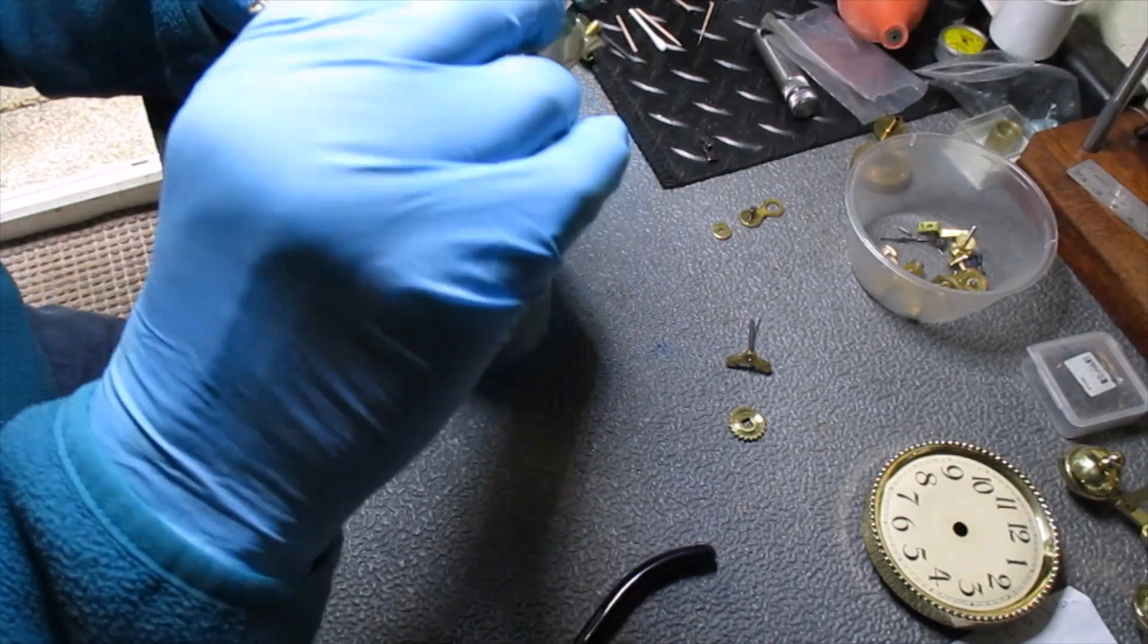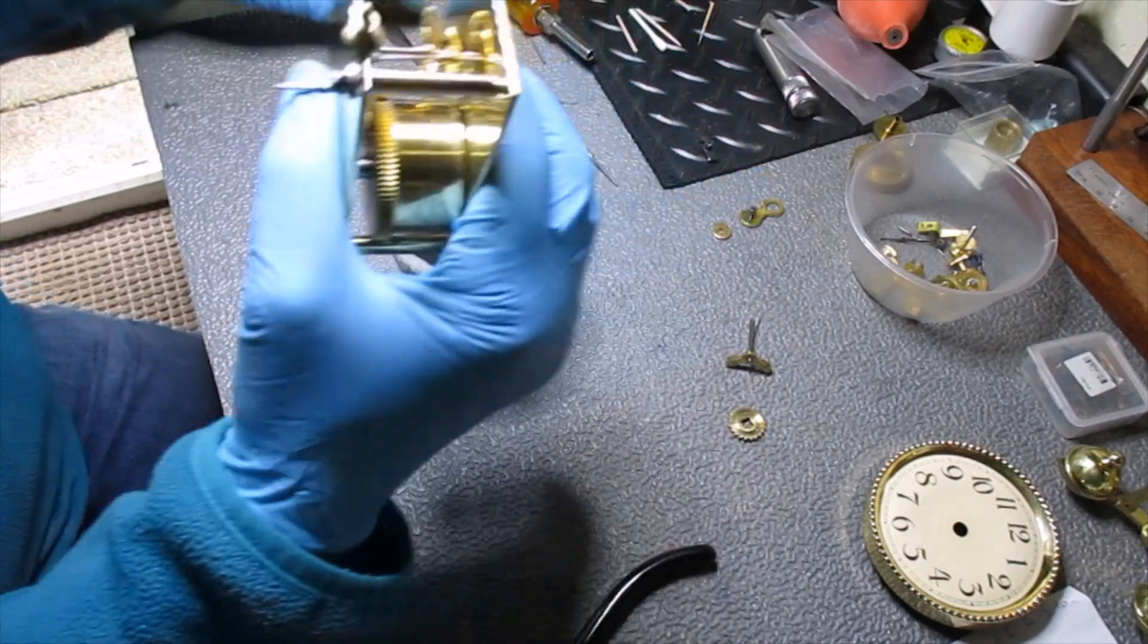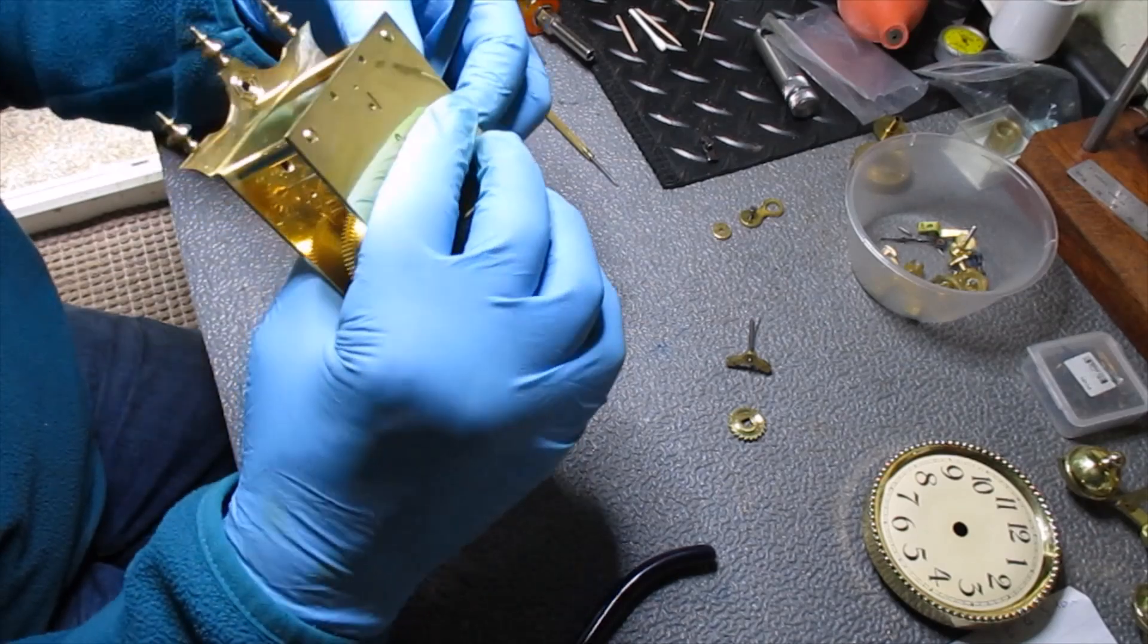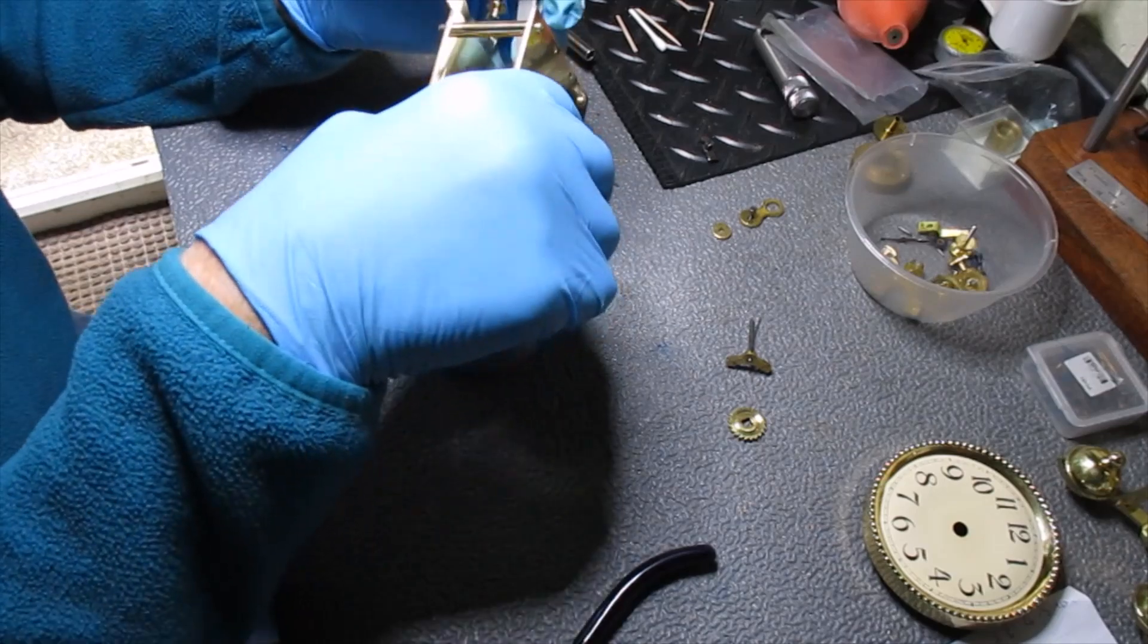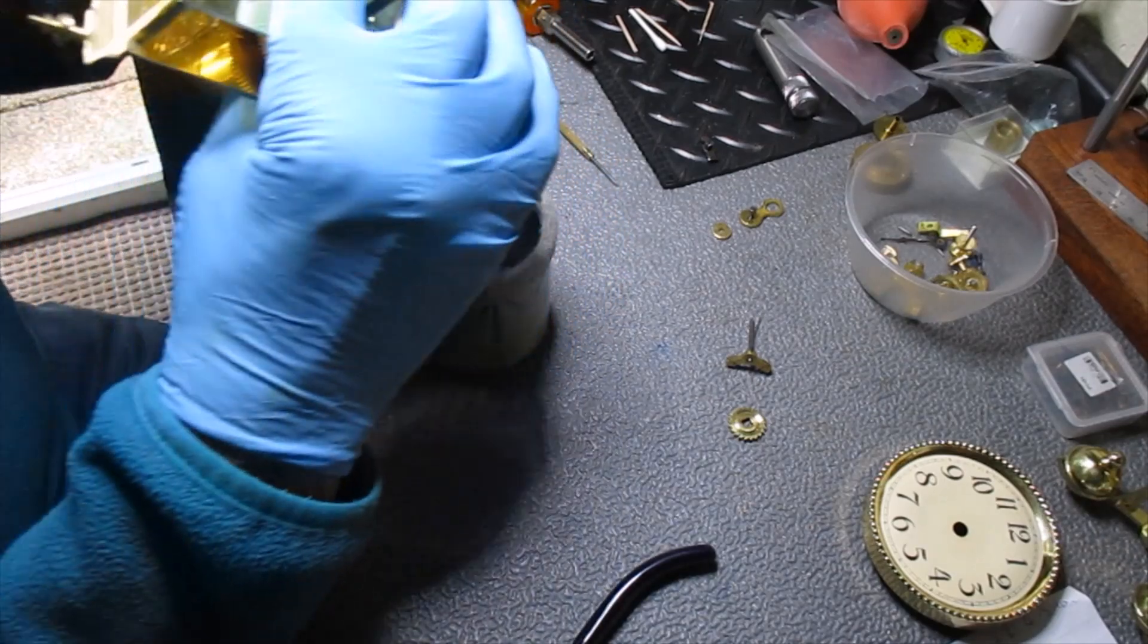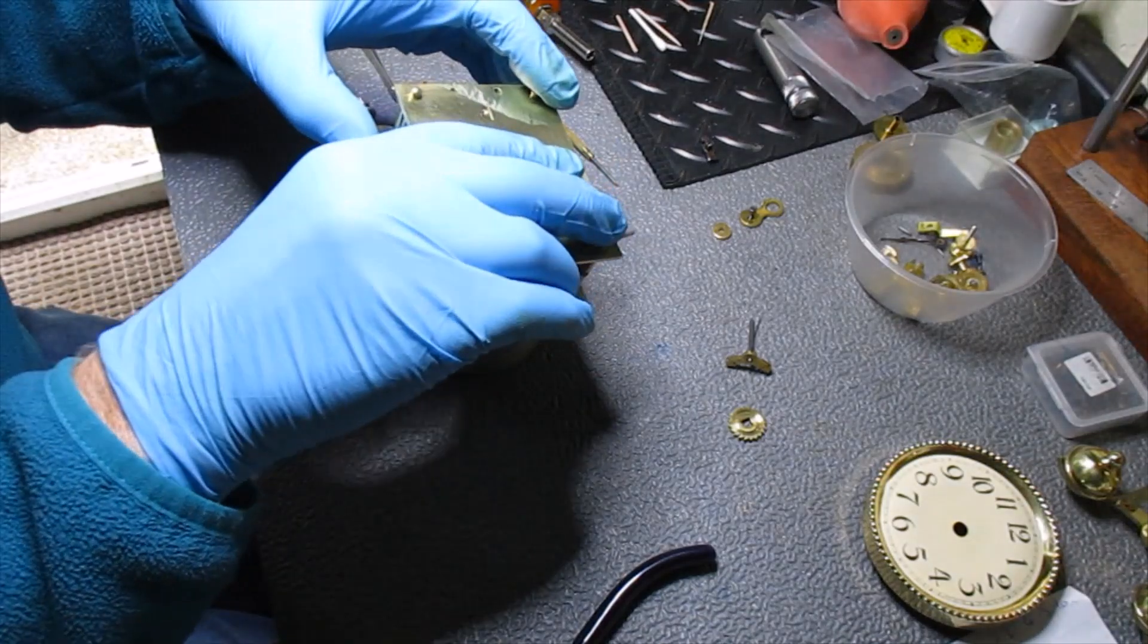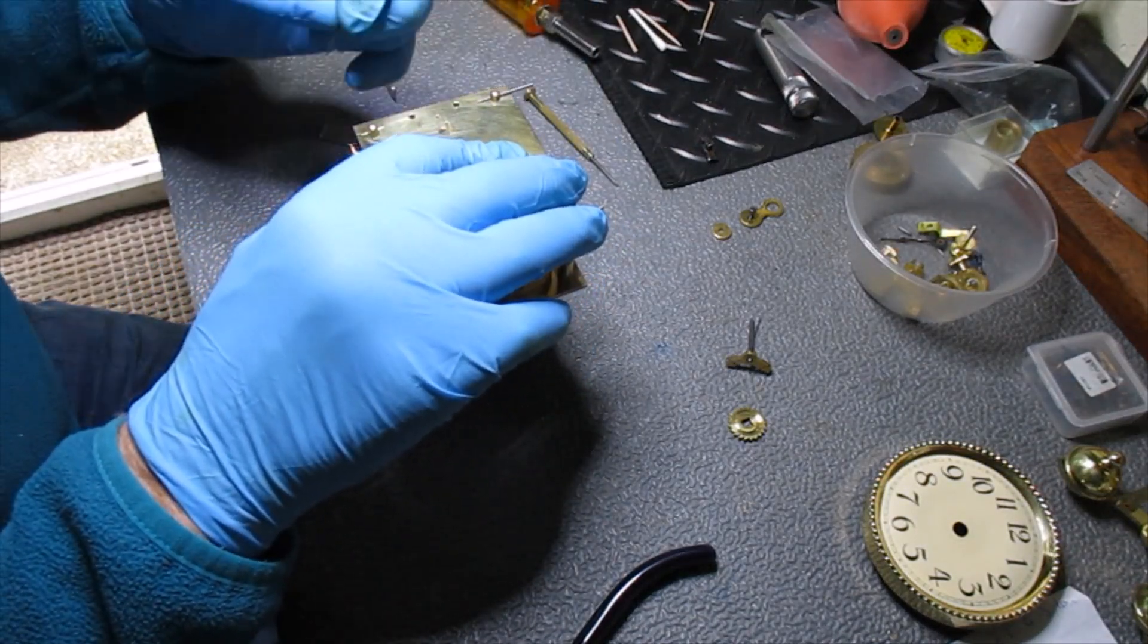Again, just hold them in place, and then I work from the center arbor once I've got that in. Get the others in place one at a time. The scapewheel is normally the last bit, and then just give it a gentle turn to make sure it's all seated right. Put the other pins in.